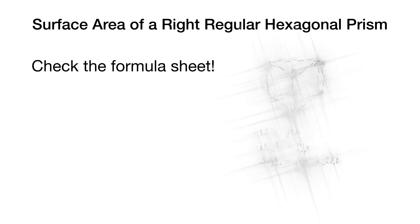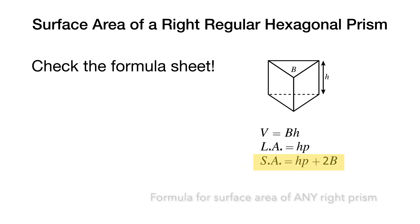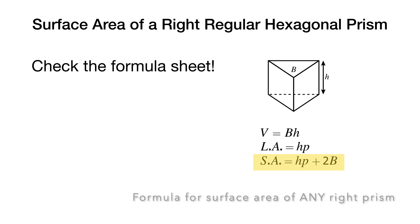Today we're going to look at how to find the surface area of a right regular hexagonal prism. First, let's check the magic formula sheet — they give us all the formulas we need. Looking at the surface area part, it's HP plus 2 uppercase B.